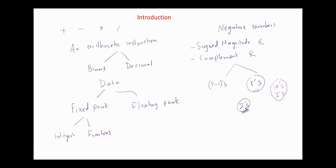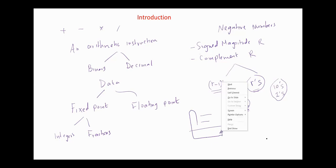First, the range of numbers represented using 2's complement representation is larger than the range of numbers represented using R-1's or 1's complement representation. In addition to that, when we add two numbers using the 1's complement representation, we have to add the end-round carry to the least significant bit. But in the 2's complement representation, we just ignore the end-round carry.